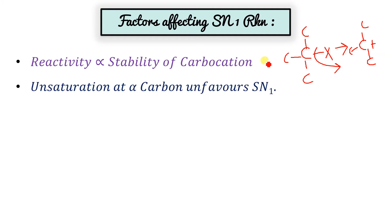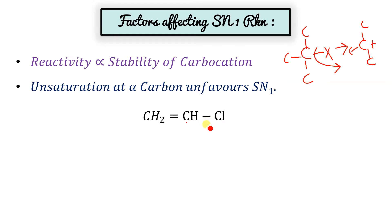Unsaturation at the alpha carbon unfavors SN1. Here the bond is sp2 hybridized, so the double bond means this C–X bond is not going to break easily. The resonance is stabilized, and because of this lone pair shifting, carbocation formation is not possible in this case. That's why this is unfavorable for SN1.